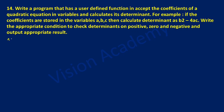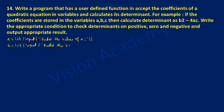Let us take three variables of type integer. A is equal to int and inside the bracket we will write input, and in double quotation marks we will ask the user to enter the value of a. Next, b is equal to int input and we will ask the user to enter the value of b. Similarly, c is int input and we will write enter the value of c.